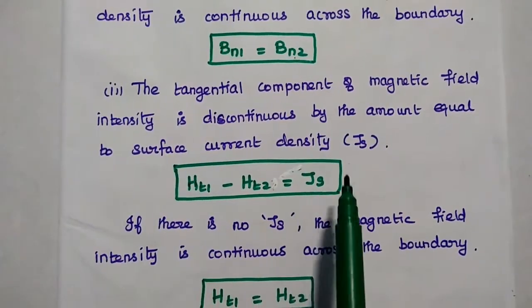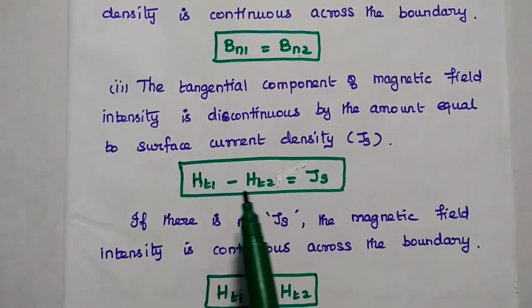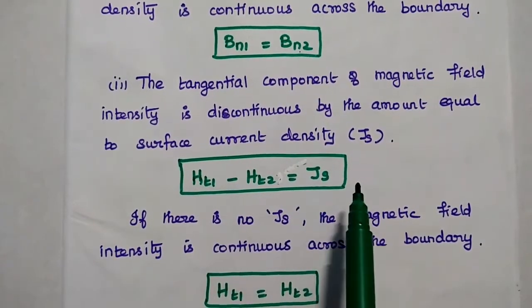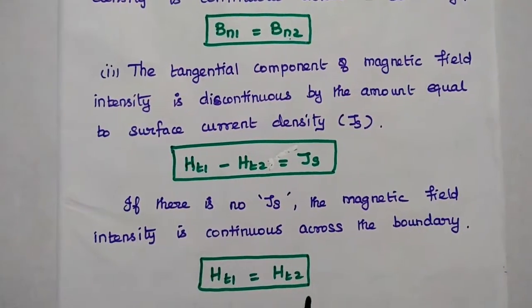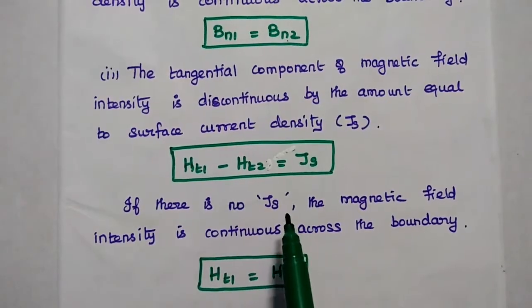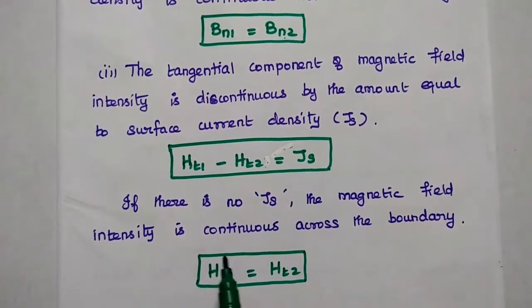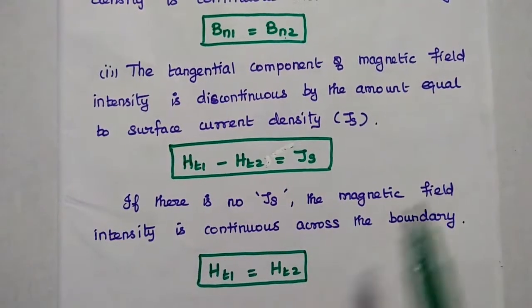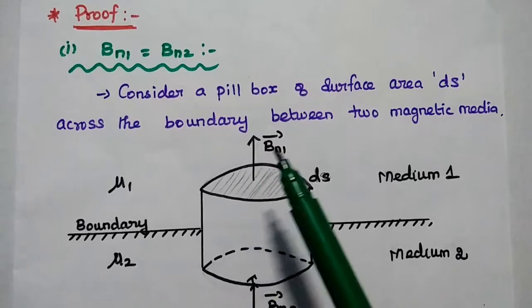If there is no surface current density, then HT1 minus HT2 is equal to 0, from which we get HT1 is equal to HT2. So if there is no surface current density, then the magnetic field intensity is continuous across the boundary. Next, we are going to prove each boundary condition.